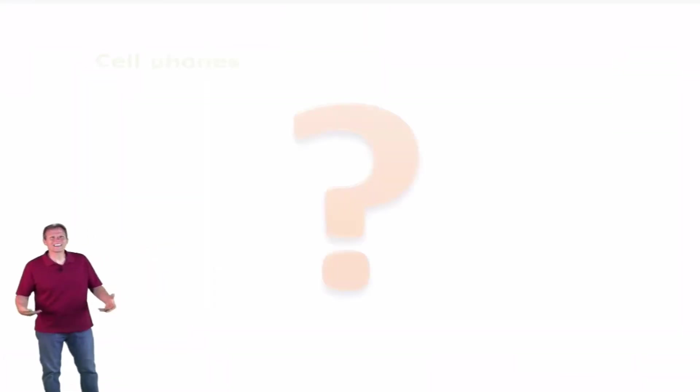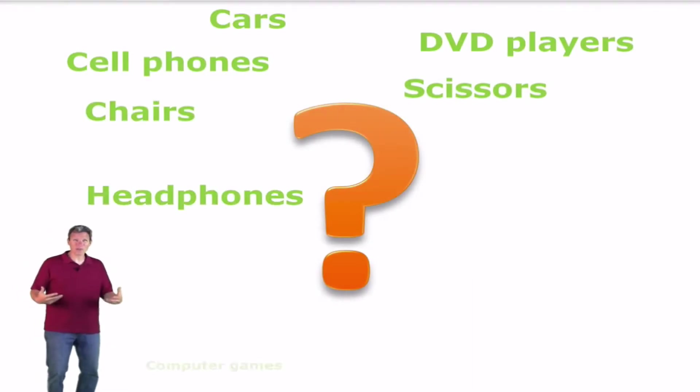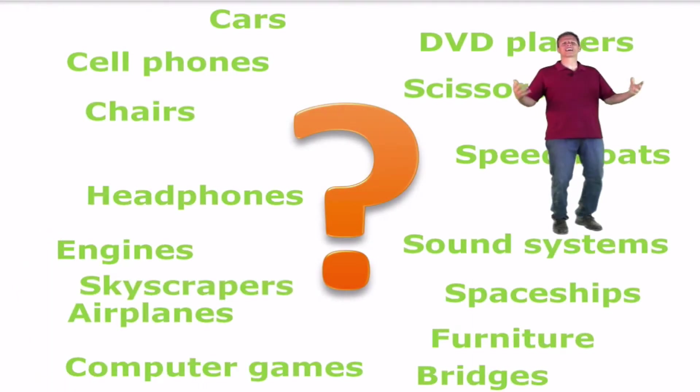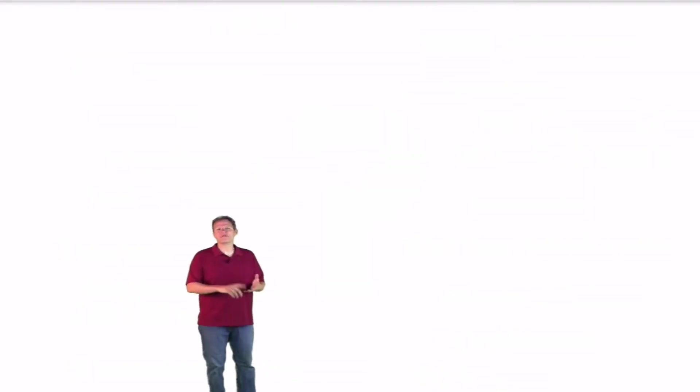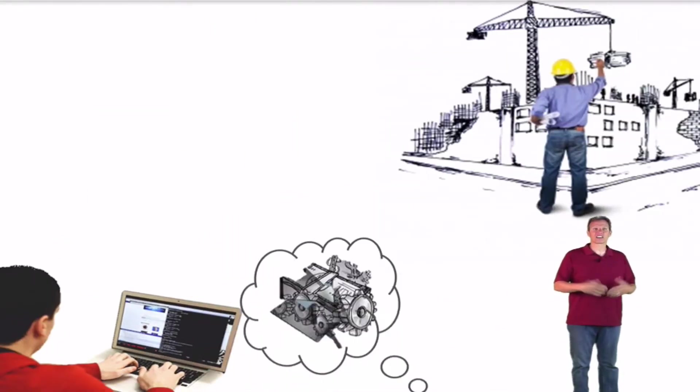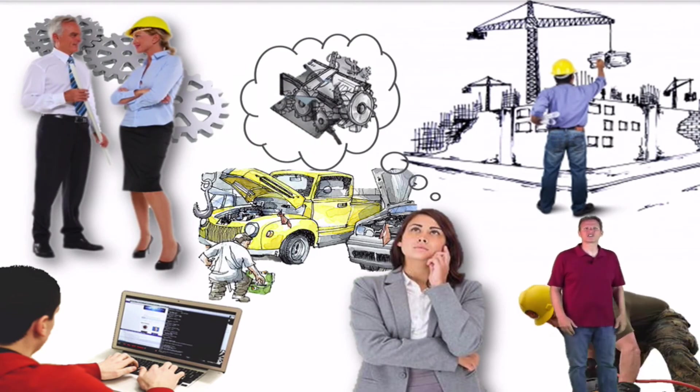Who are the people who take the elements and the materials that come from the elements and design and invent all the technologies we have? Some of the names we call these people are inventor, mechanic, architect, carpenter, builder, programmer, machinist, and engineer.